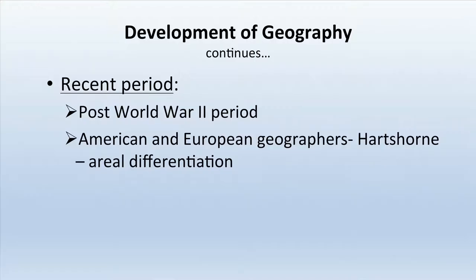Ratzel, another geographer of the modern period, built the structure of modern geography. The recent period began after World War II, when American and European geographers rose to prominence. Hartshorne was one of the most eminent geographers of this period and talked about aerial differentiation, which forms the basis of regional geography and related fields.